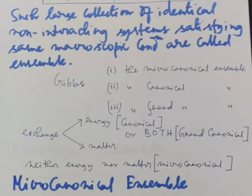We are emphasizing the microcanonical ensemble. This ensemble consists of systems which are isolated from the rest of the world. Such a system is also known as a closed isolated system and has a fixed volume, fixed total energy, and a fixed total number of particles. The probability density p, which is a function of p and q - the generalized momenta and coordinates - differs from zero only on the constant energy hypersurface.